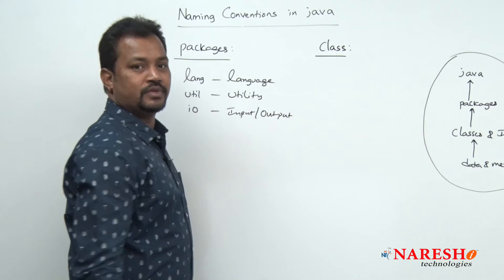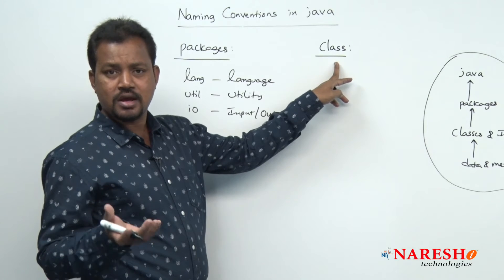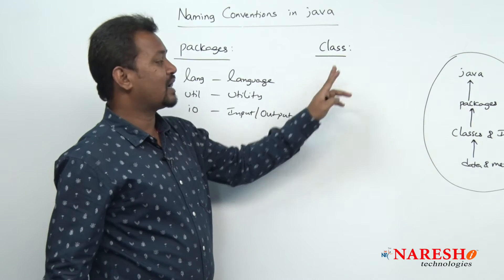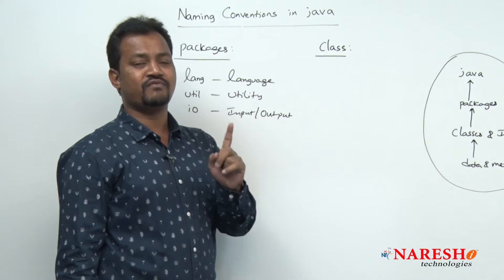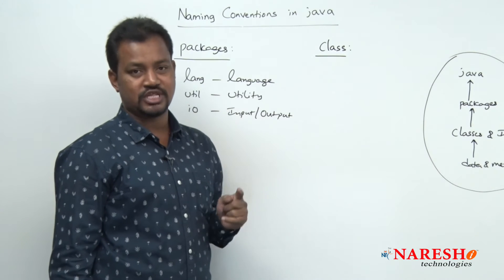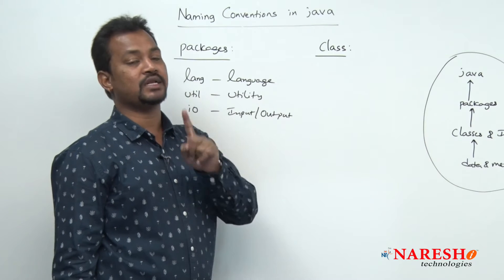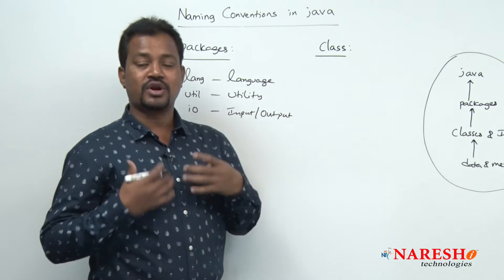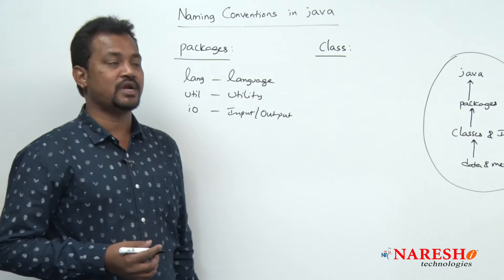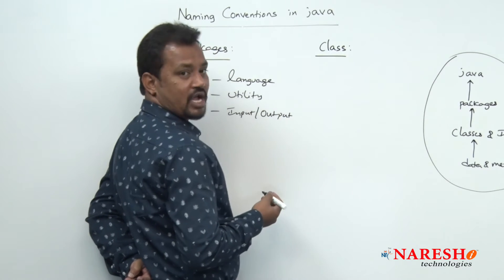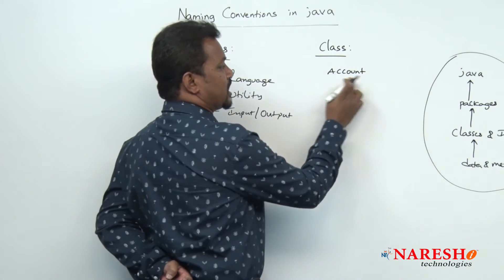Now comes your class. A class is a blueprint of object, or class is a logical structure of object. For now, class is a collection of data and methods. Whenever you want to code or write one class within the program, the starting letter of every word in the class name must be capital. That is the naming convention. For example, if I want to write a class name 'account': A capital — 'Account'. If it is a built-in class, String has S capital, Object has O capital.